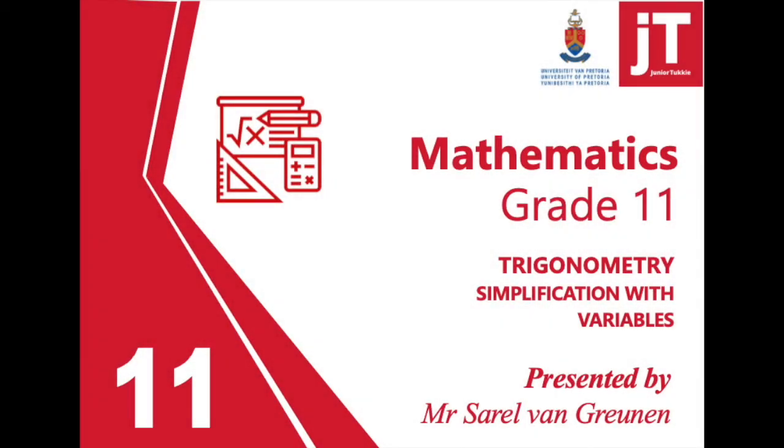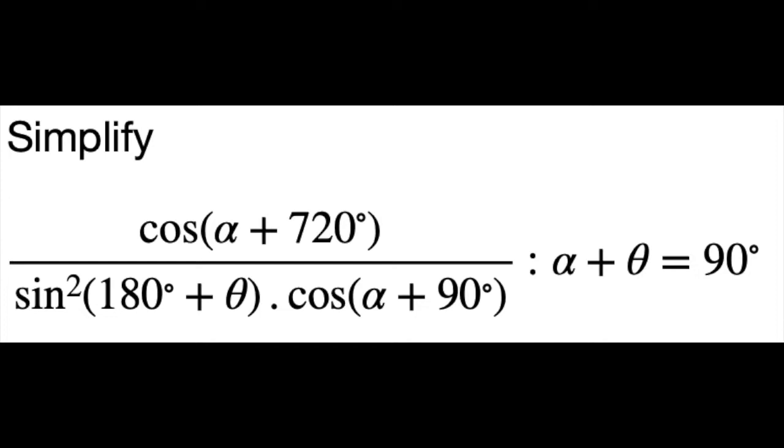Cos of alpha plus 720 over sin squared 180 degrees plus theta times by cos alpha plus 90.